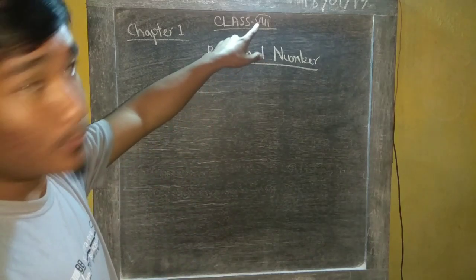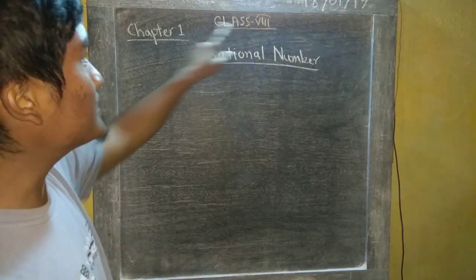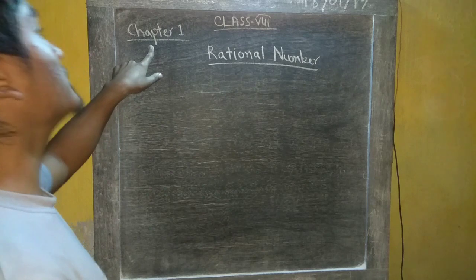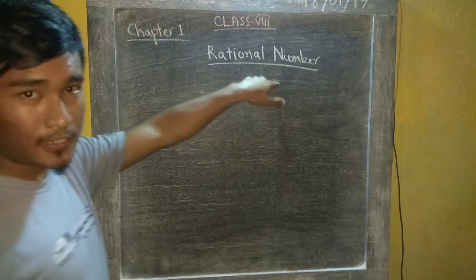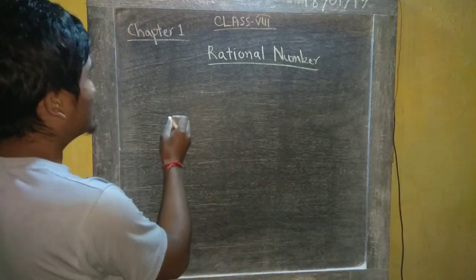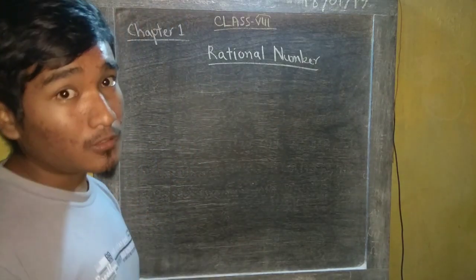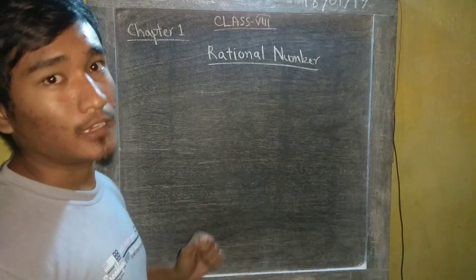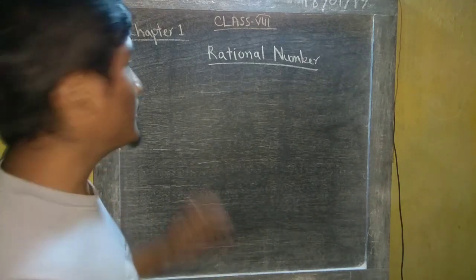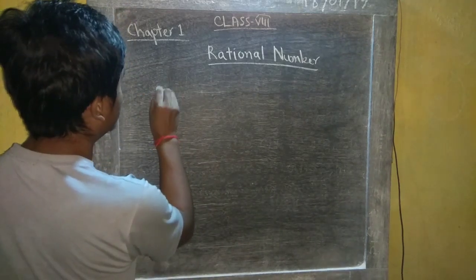Today we are going to discuss Classic Mathematics Chapter 1, Rational Numbers. So, the rational number idea — how can I go ahead? Here, I will be able to understand.